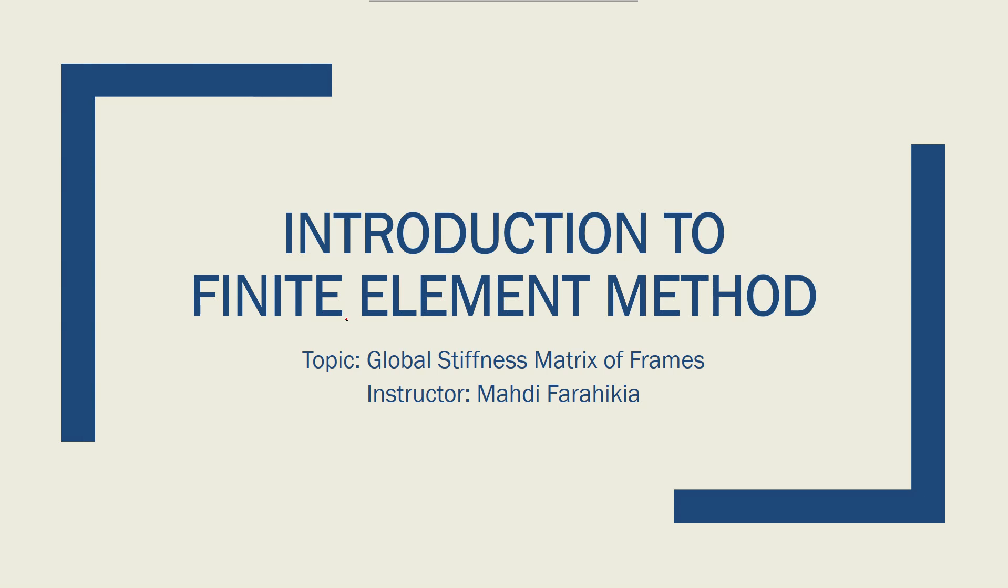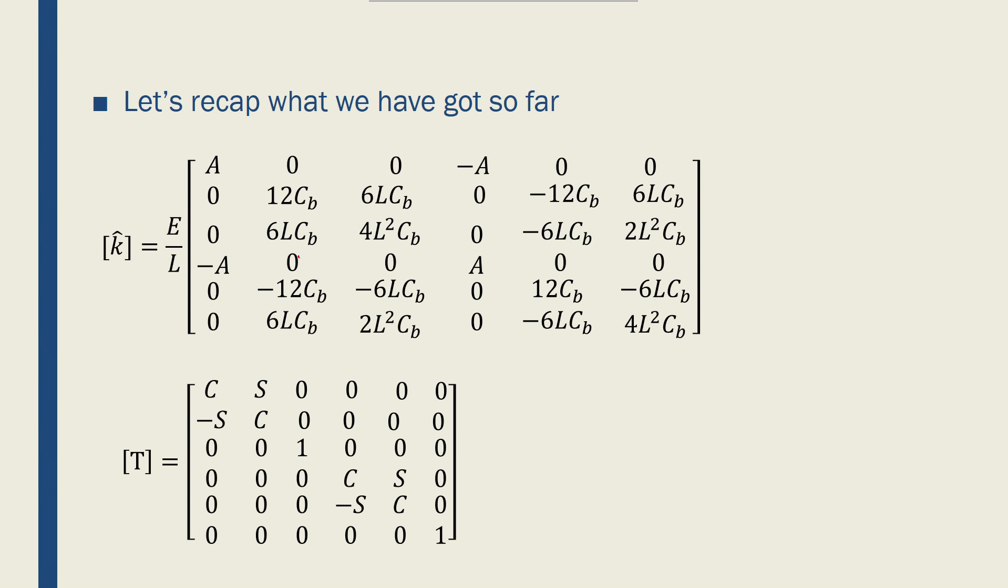We're now ready to find the global stiffness matrix for a frame element. So to recap, this is what we've got so far. We have found the local stiffness matrix for a frame element to be a 6 by 6 matrix, and we've found a 6 by 6 transformation matrix for a typical frame element that would convert from local to global coordinate system.